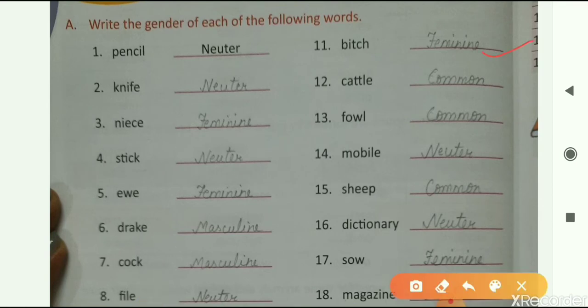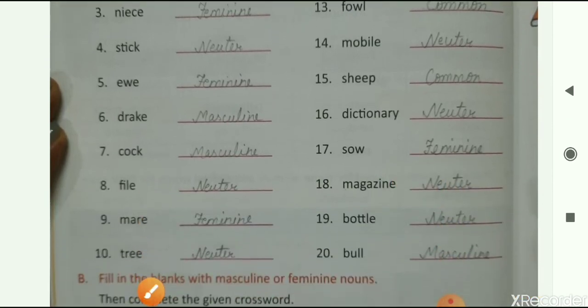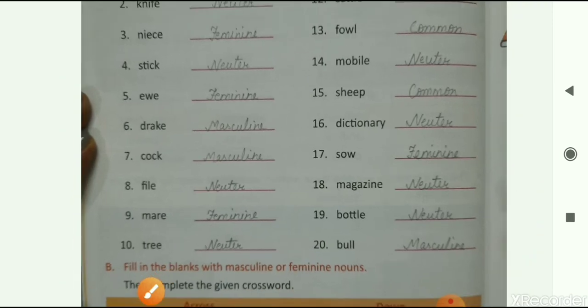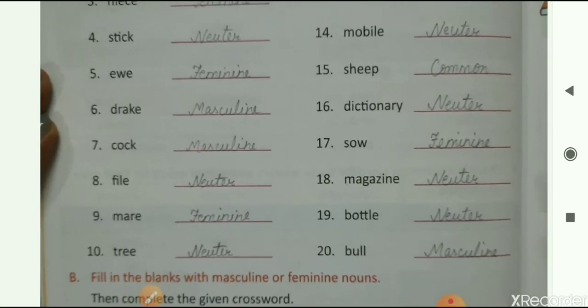Then bitch is feminine. So write here, feminine. Then cattle, common gender. Fowl, also common. Mobile, neuter gender. Sheep, again common gender. Dictionary, neuter gender. Write here, neuter. Then sow, feminine gender. Write here, nine. Magazine, neuter gender. Bottle, neuter. And bull, masculine gender. So write here, masculine. So these are your answers of exercise A. You have to complete these answers in book only.